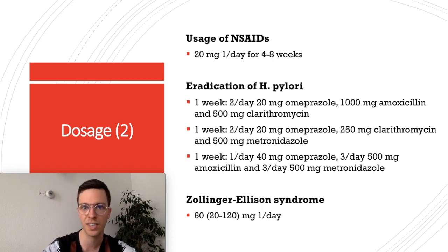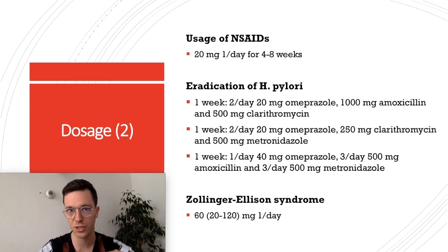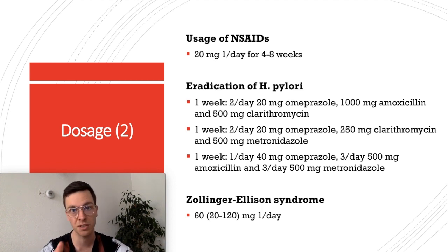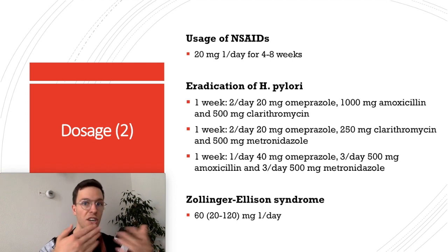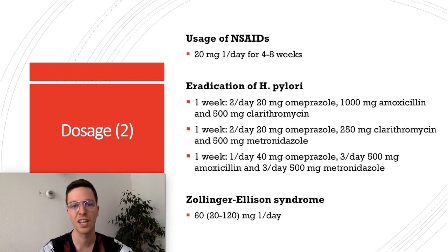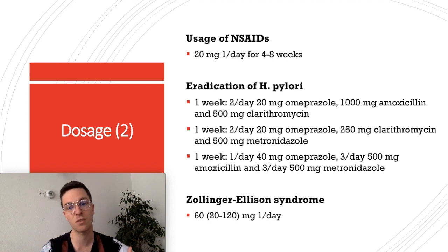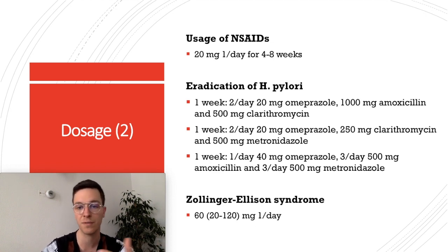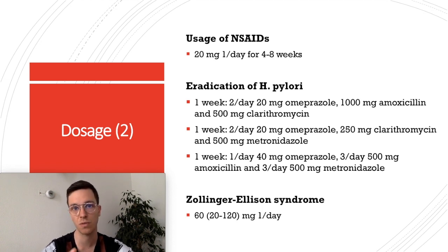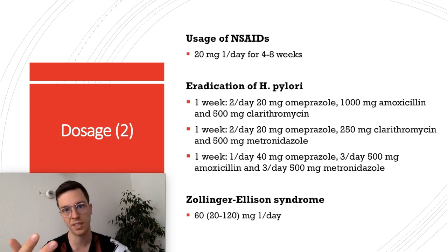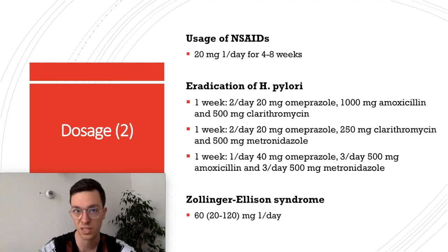For eradication of H. pylori, Omeprazole is always combined with antibiotics. There are three 1-week options: Option 1 is 20 mg twice a day with 1000 mg amoxicillin and 500 mg clarithromycin. Option 2 is 20 mg twice a day with 250 mg clarithromycin and 500 mg metronidazole. Option 3 is 40 mg once a day, with 500 mg amoxicillin three times a day and 500 mg metronidazole three times a day. For Zollinger-Ellison syndrome, use 60 mg once a day, though the dose can range up to 120 mg depending on specific symptoms.